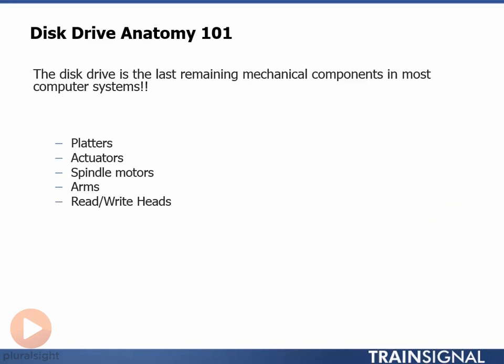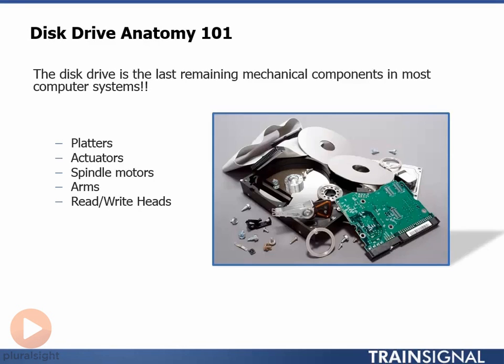The major mechanical components of all disk drives include the following: platters, the actuator, the spindle motor, the arms and the read-write heads. The picture on the slide shows what those components look like if you take the lid off and extract most of those internal components.